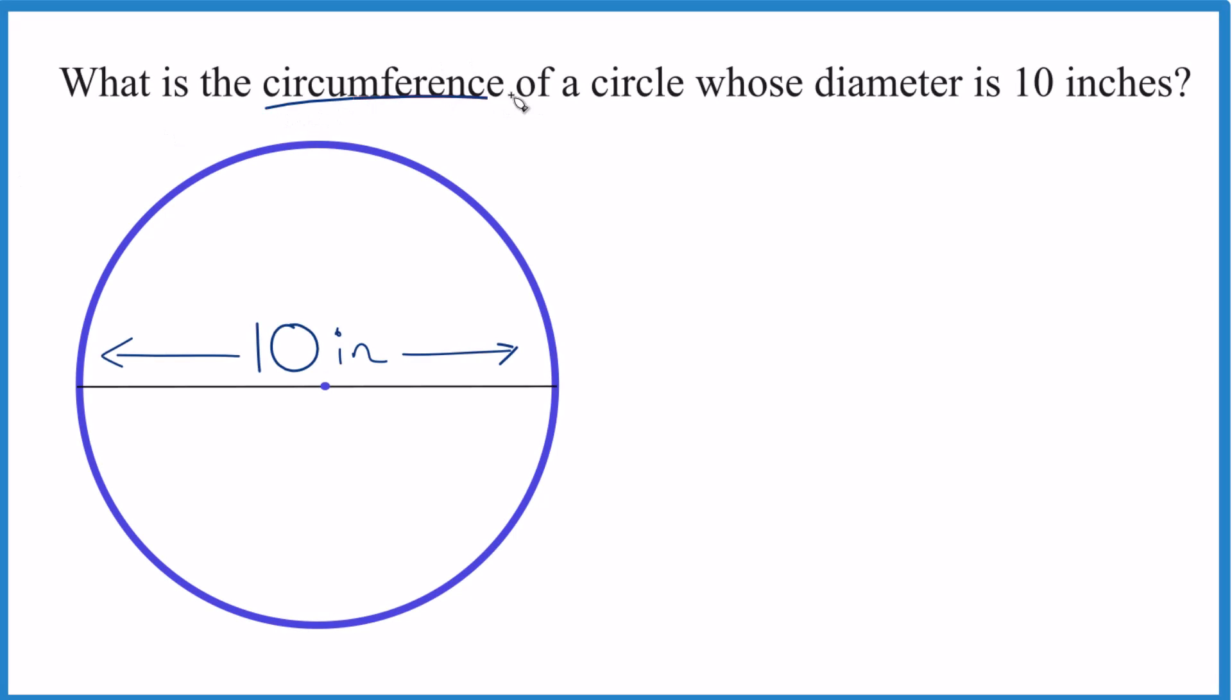So let's figure out the circumference for a circle whose diameter is 10 inches. The circumference, that's the distance around the outside. The diameter, that's the distance across the center here.